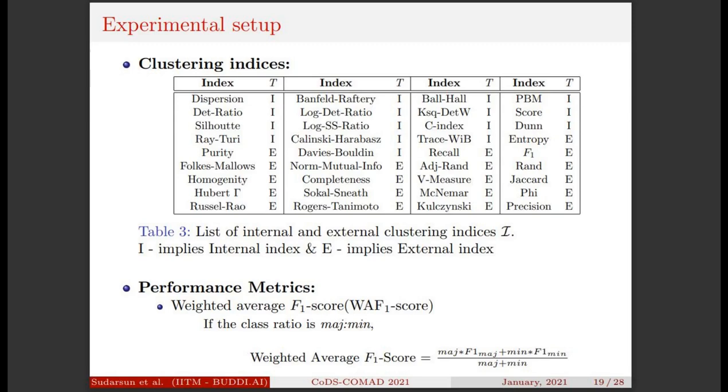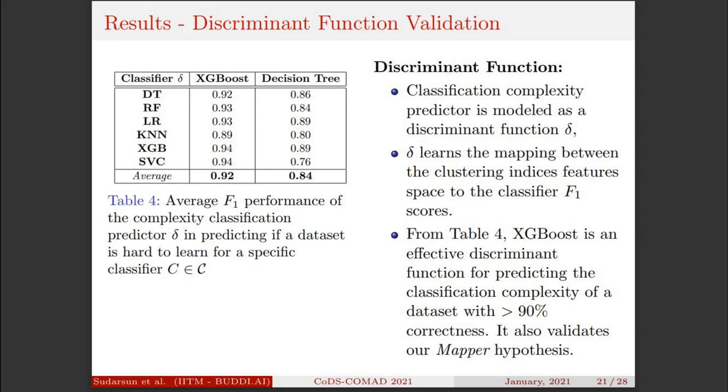Moving on to our results section. First, we try to validate our classification complexity predictor using cross-validation. From the table, it is clear that the XGBoost classifier is effective with more than 90% correctness overall. This also validates our hypothesis.